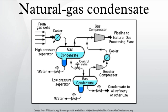There are many condensate sources worldwide and each has its own unique gas condensate composition. However, in general, gas condensate has a specific gravity ranging from 0.5 to 0.8, and is composed of hydrocarbons such as propane, butane, pentane, hexane, etc.